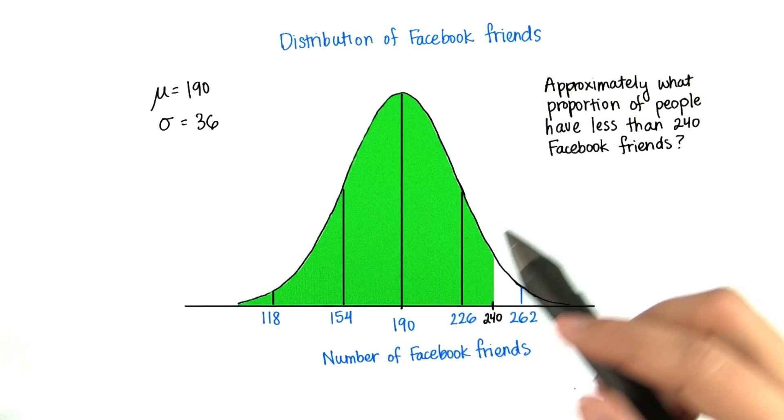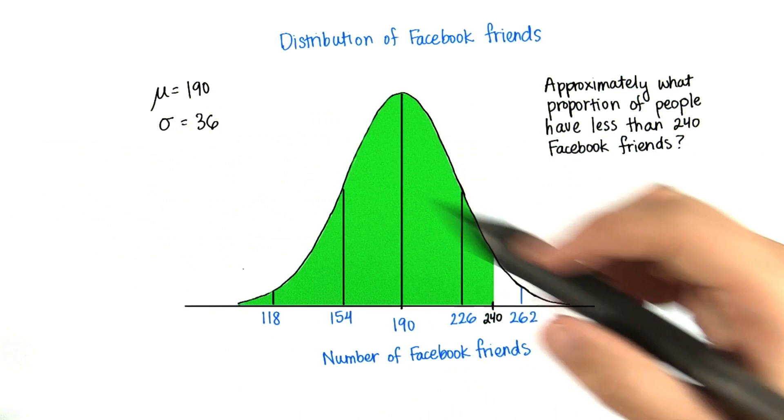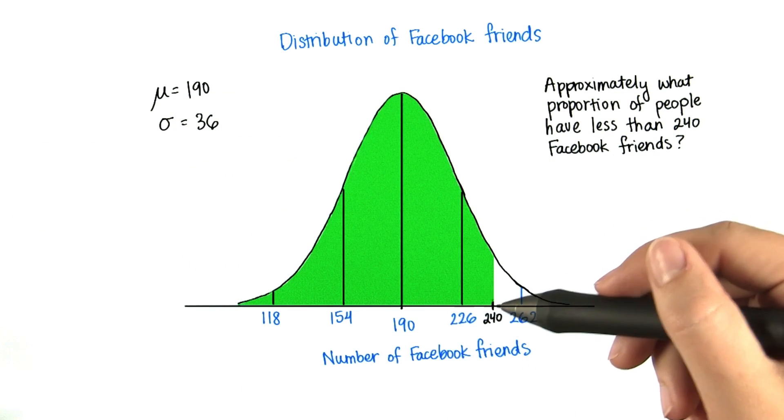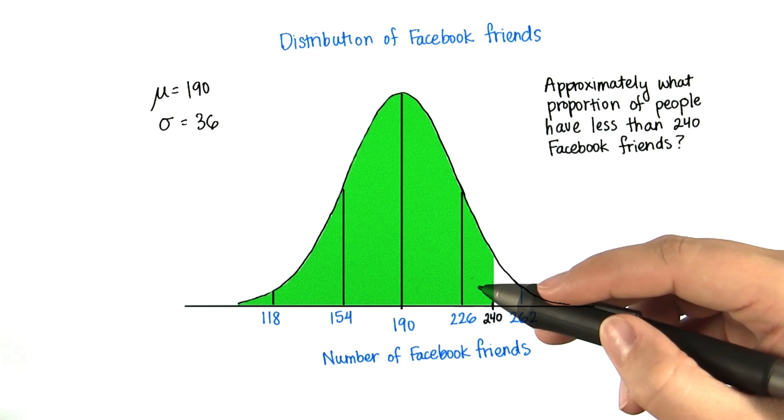So then how are we supposed to calculate the area under this curve between negative infinity and this non-integer number of standard deviations from the mean?